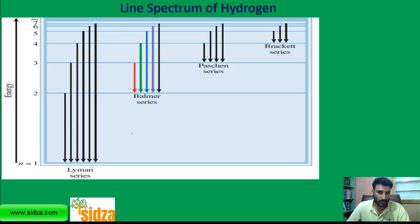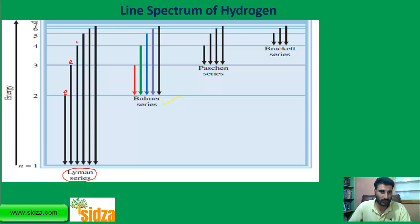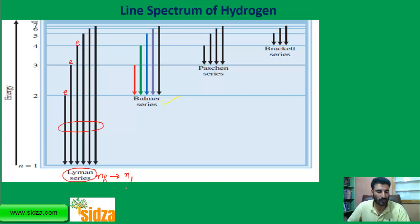The Lyman series is when an electron in any higher shell makes a jump to the first energy level. So whether it is present in the second, third, fourth, fifth, or higher energy level, when it jumps to the first energy level, the frequencies emitted are classified as the Lyman series — from any higher shell to N1.